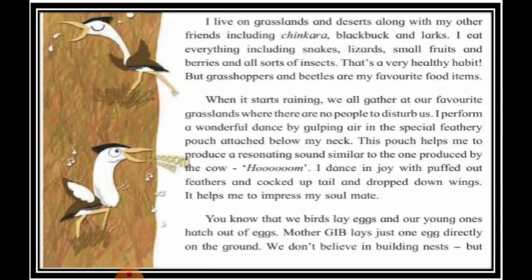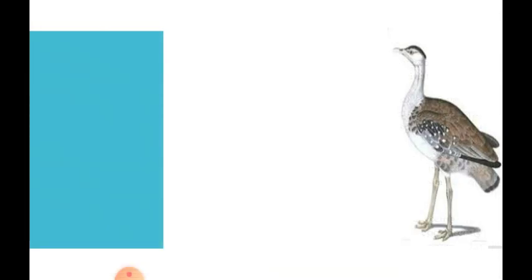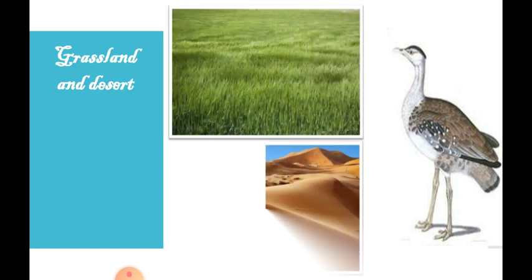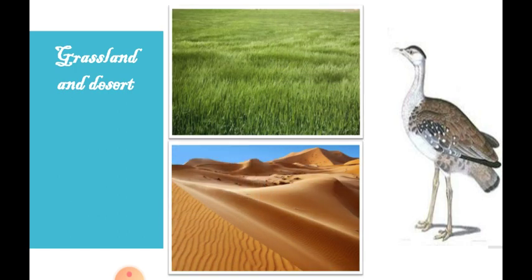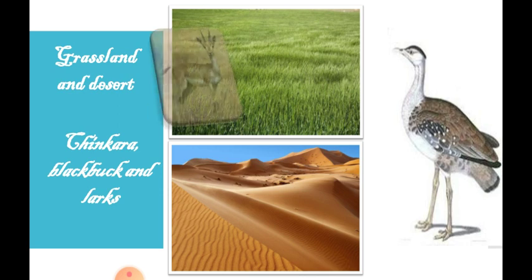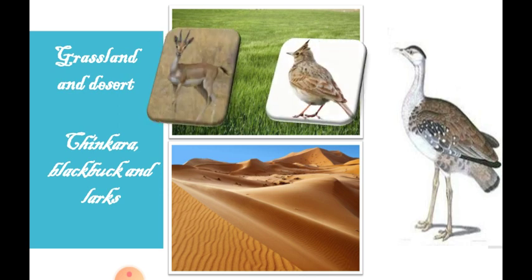This is regarding the first paragraph. Now let's go to the next paragraph. It says: 'I live on grasslands.' Here it is trying to tell us about its habitat. Habitat means the place wherein they live. It lives on grasslands and desert along with its other friends — other animals like Chinkara, Blackbird, and larks.